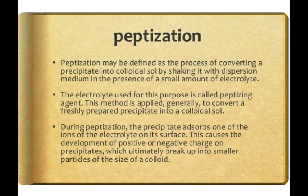Next is peptization — the process of converting a precipitate into a colloidal sol by shaking it in the presence of a small amount of electrolyte. The electrolyte used is called a peptizing agent. This method is normally used to convert a freshly prepared precipitate into a colloidal sol. The precipitate absorbs one of the ions of the electrolyte onto its surface, developing a positive or negative charge, and is then broken down into smaller colloidal particles.